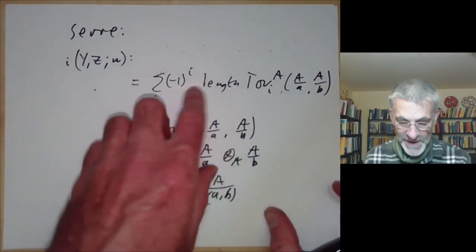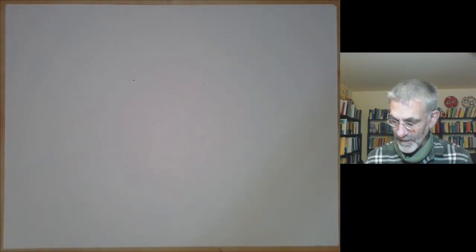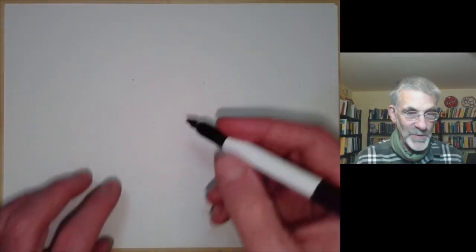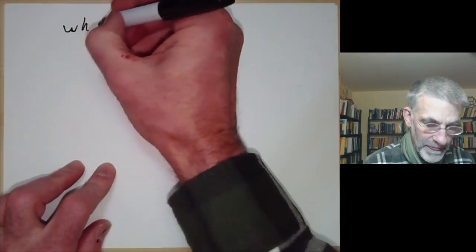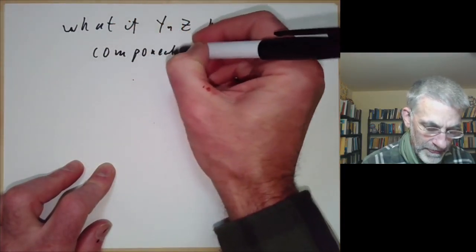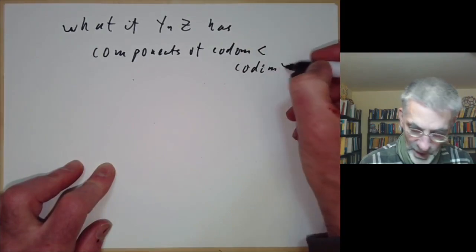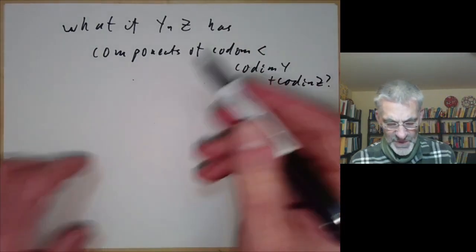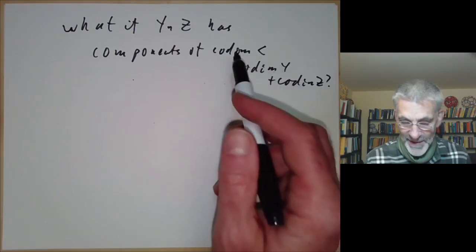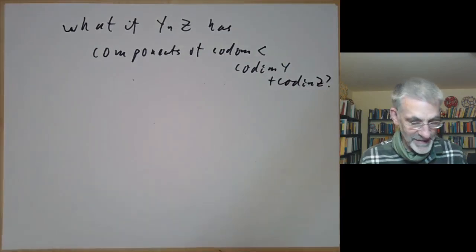This turns out to give a really nice definition of intersection multiplicity. For instance, it's always non-negative, which isn't entirely obvious because some terms in the formula are actually negative. There's another problem we've been a bit quiet about: what if Y intersection Z has components of codimension less than codimension Y plus codimension Z? Generically the intersection components would have codimension equal to the sum, and Serre's formula works fine. However, sometimes it has the wrong codimension.